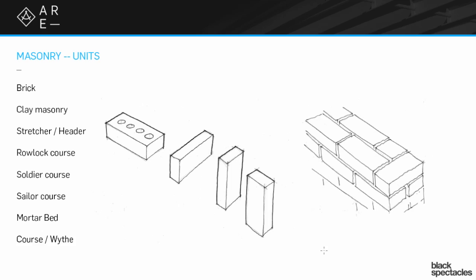Mostly, bricks are made from different kinds of clay — clay and shale and a few other materials. The basic terminology: if we have a wall set up, especially in the older days, back 50, 100, 200 years ago, you might have multiple lines of brick, multiple wythes of brick.